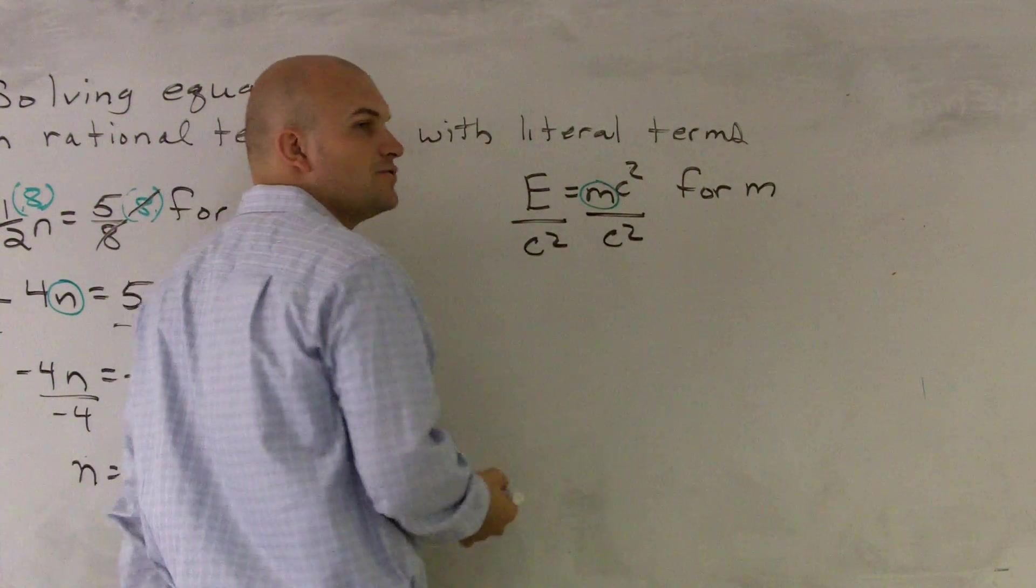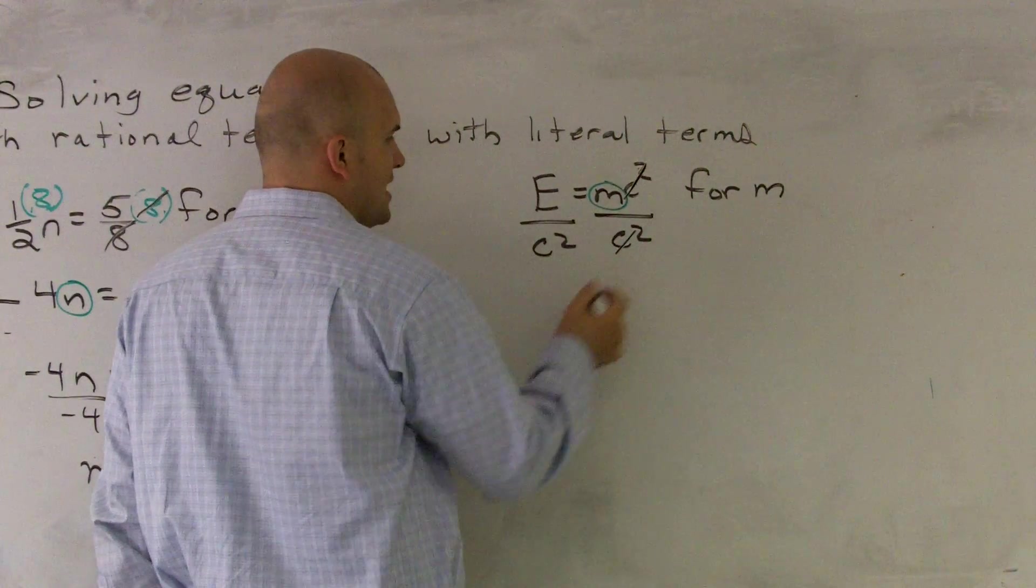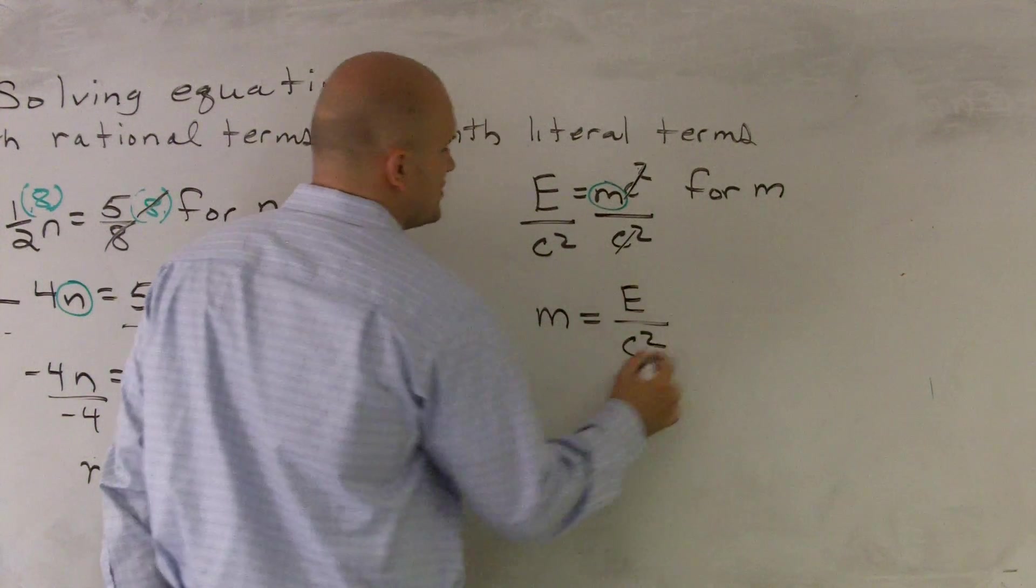Therefore, c squared divided by c squared is going to give me 1, and that will leave m by itself. Those cancel out. Therefore, my final solution is m equals E over c squared.